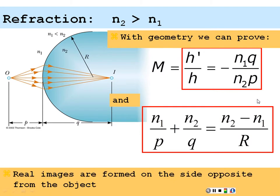Real images will actually be formed on the side opposite from the object, and so the actual rays are forming the image — hence it is a real image.